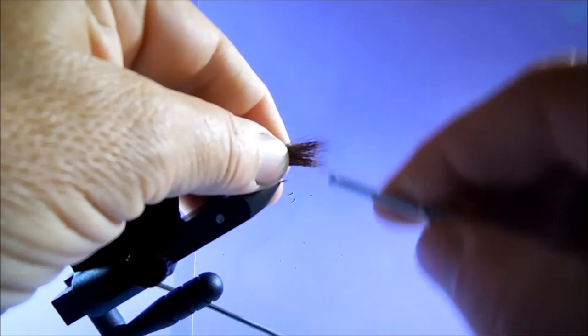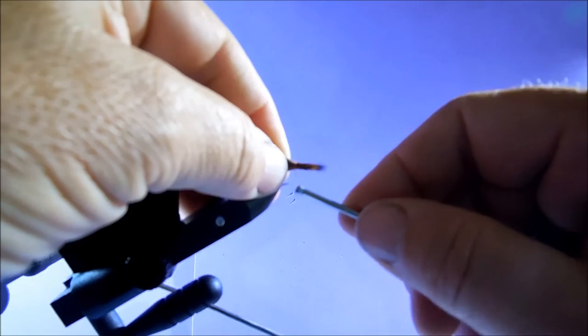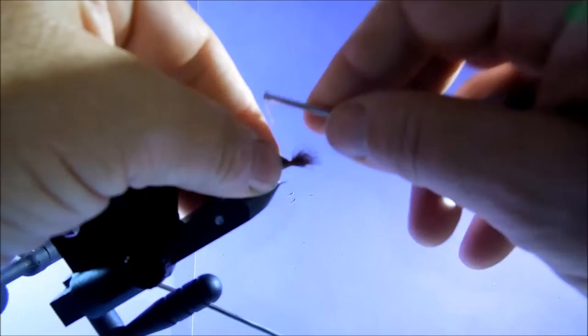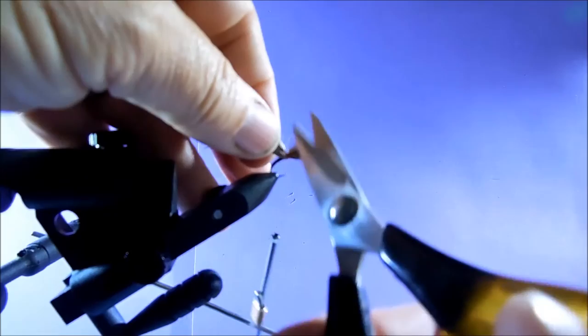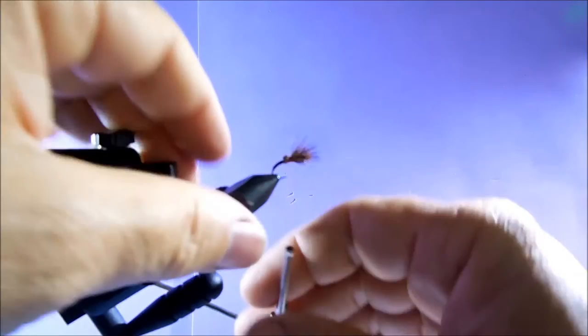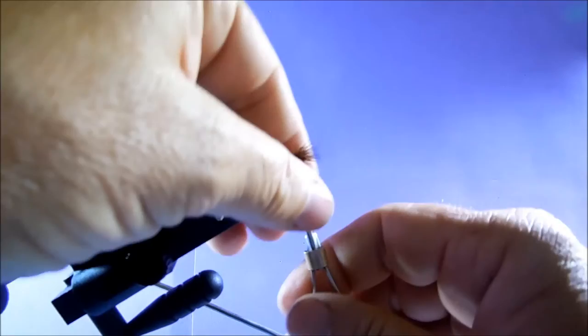Put it up on the body, maybe about there somewhere. You don't have to flare it quite as much as that. I'm going to chop it off, get rid of the waste, just wrap those through there so it locks it in and bring your thread forward.